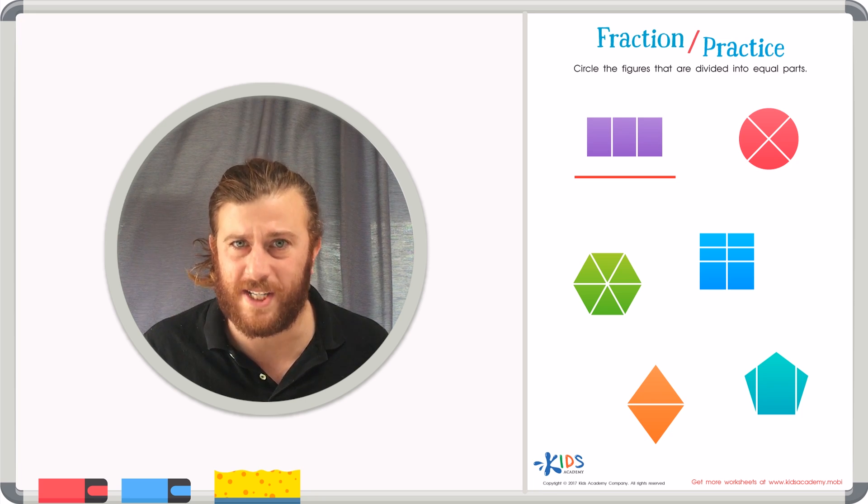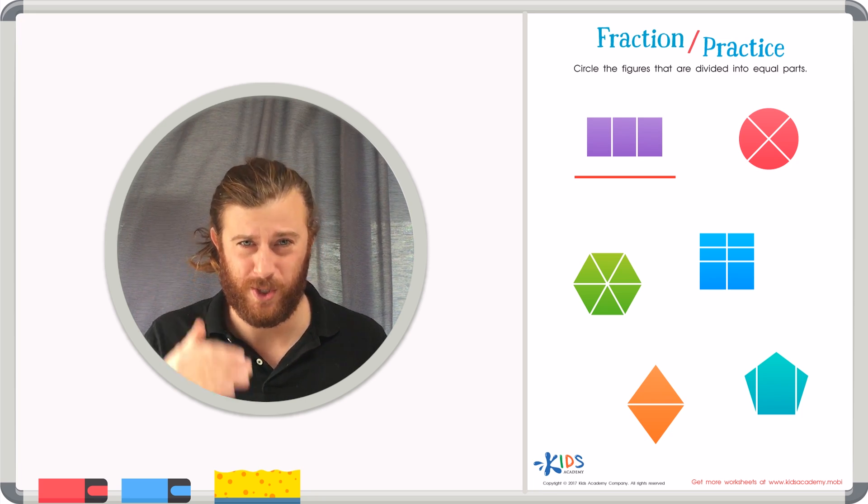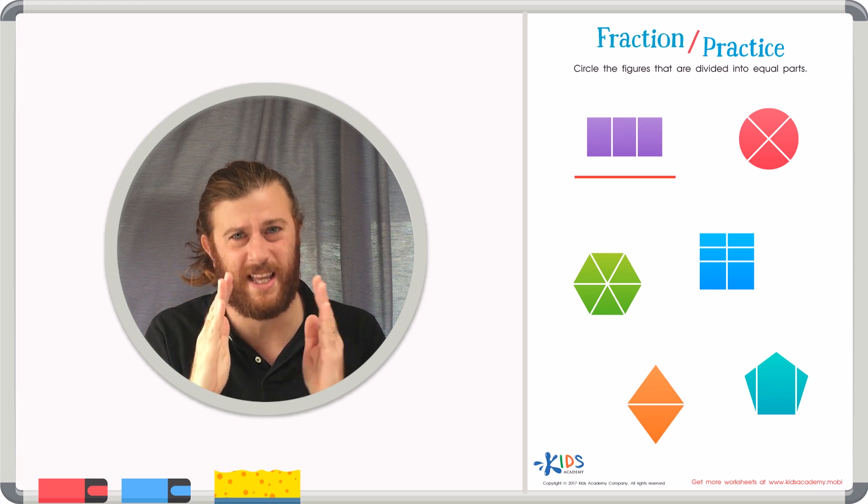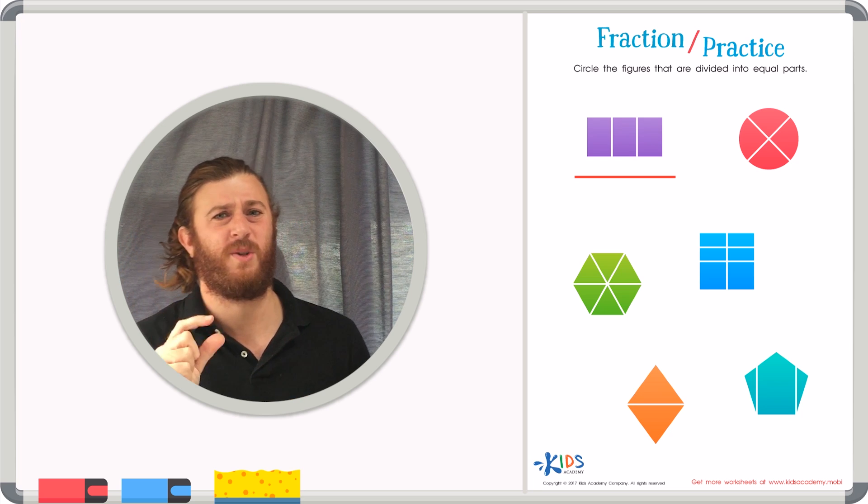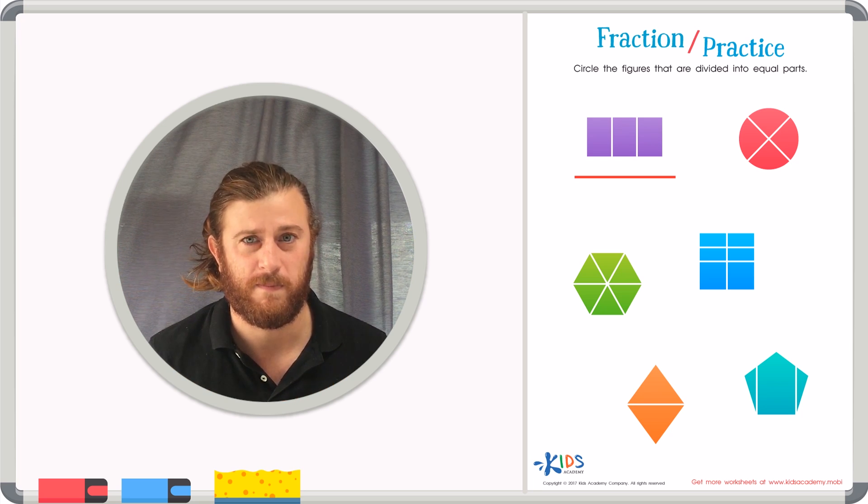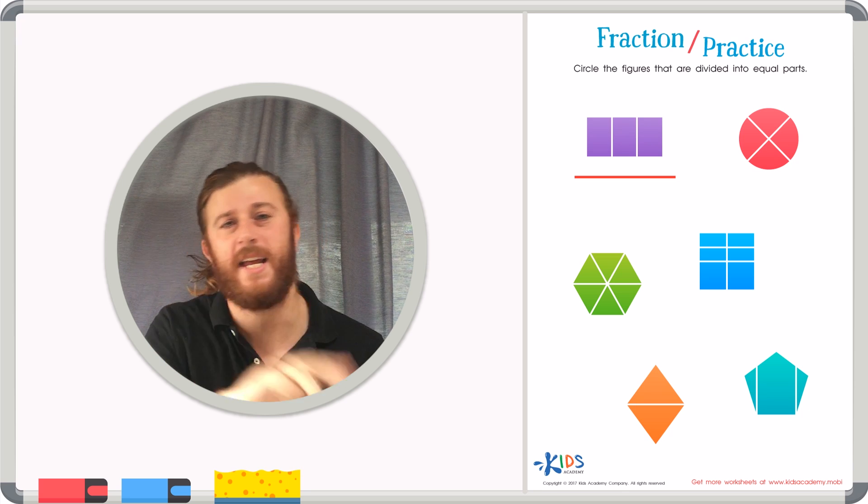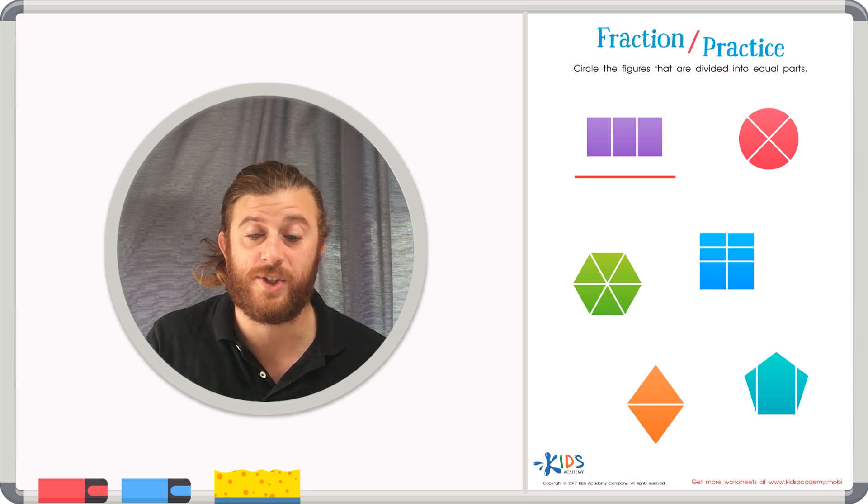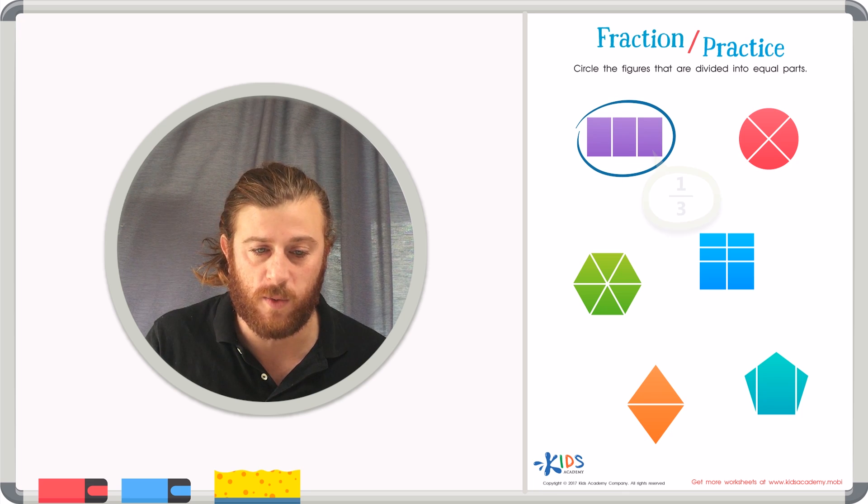So this shape, we have a rectangle. This rectangle is cut up into three parts. Do you see three equal, even parts? Or are the parts uneven? You have one big piece, one small piece, one medium piece. Well, my eyes tell me that these are three equal pieces. So I'm going to go ahead and circle this rectangle that is cut into thirds, or three equal pieces.